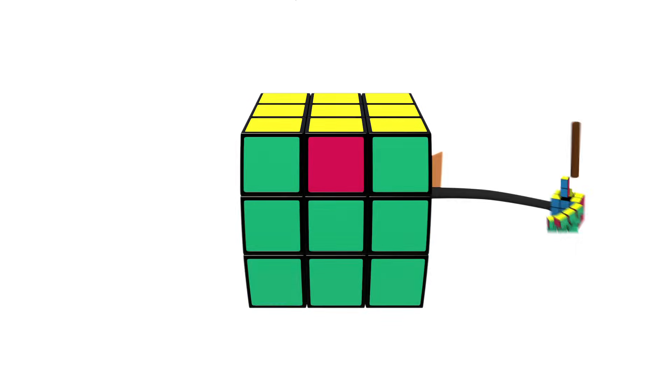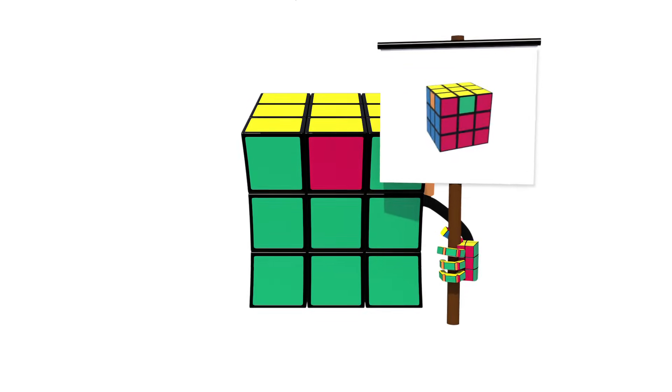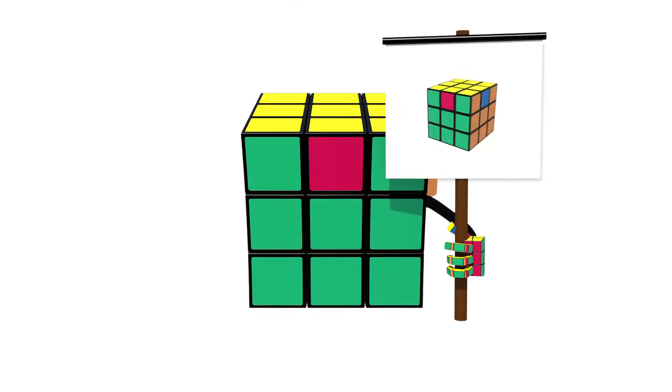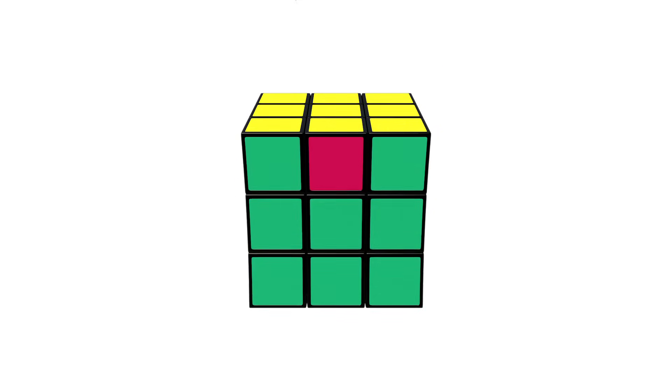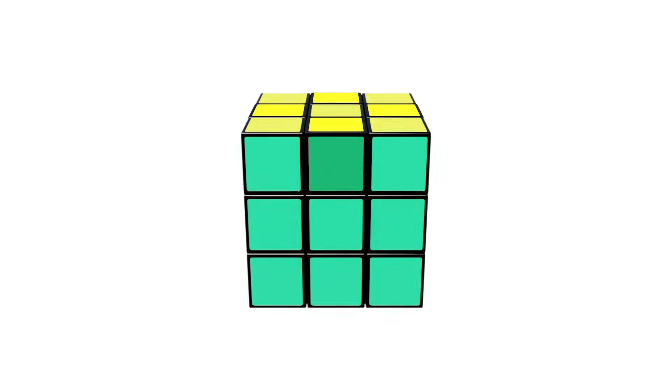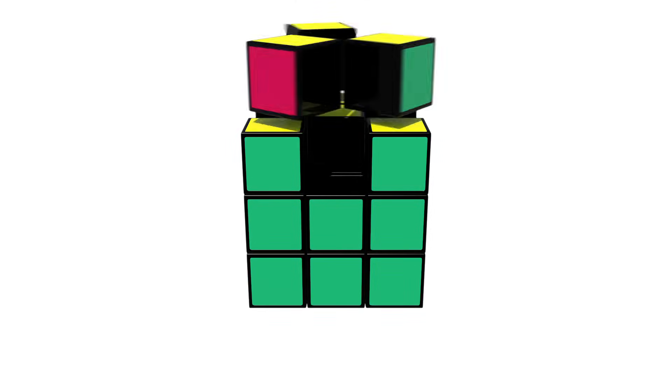If all four edges are incorrect, then you can do either of the sequences coming up. Then you'll be able to work out which way you need to go. If you need to turn it clockwise, with the completed face still at the back, then follow this.